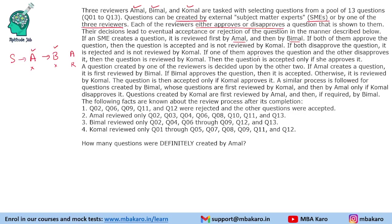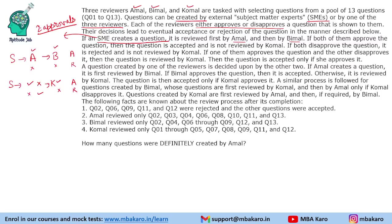If one of them approves the question and the other disapproves it, the question is reviewed by Komal. Komal is the final decider — if Komal approves it, the question gets accepted; if Komal disapproves it, it gets rejected. To summarize: if an SME creates a question, it requires two approvals to be accepted, otherwise it is rejected.